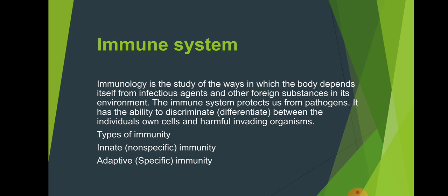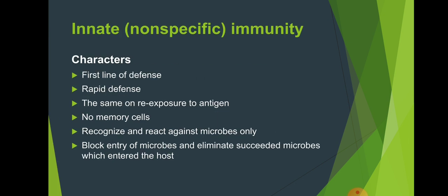There are two types of immunity. The first is innate immunity, also called non-specific immunity. The second type is adaptive or specific immunity, also called acquired immunity.